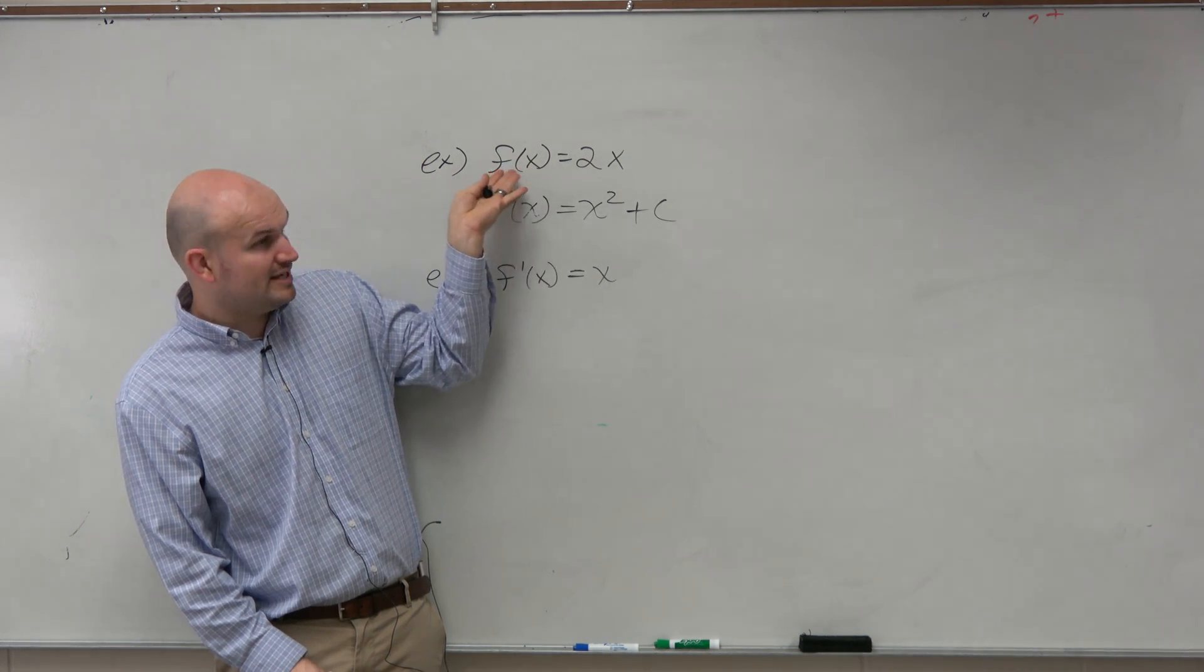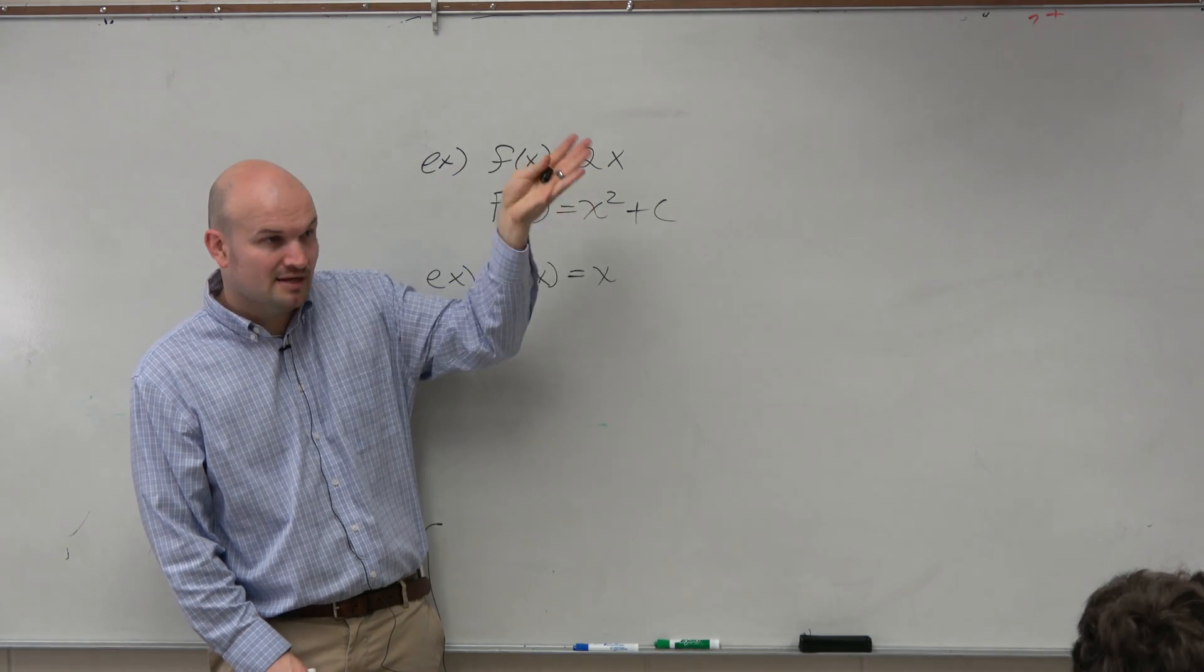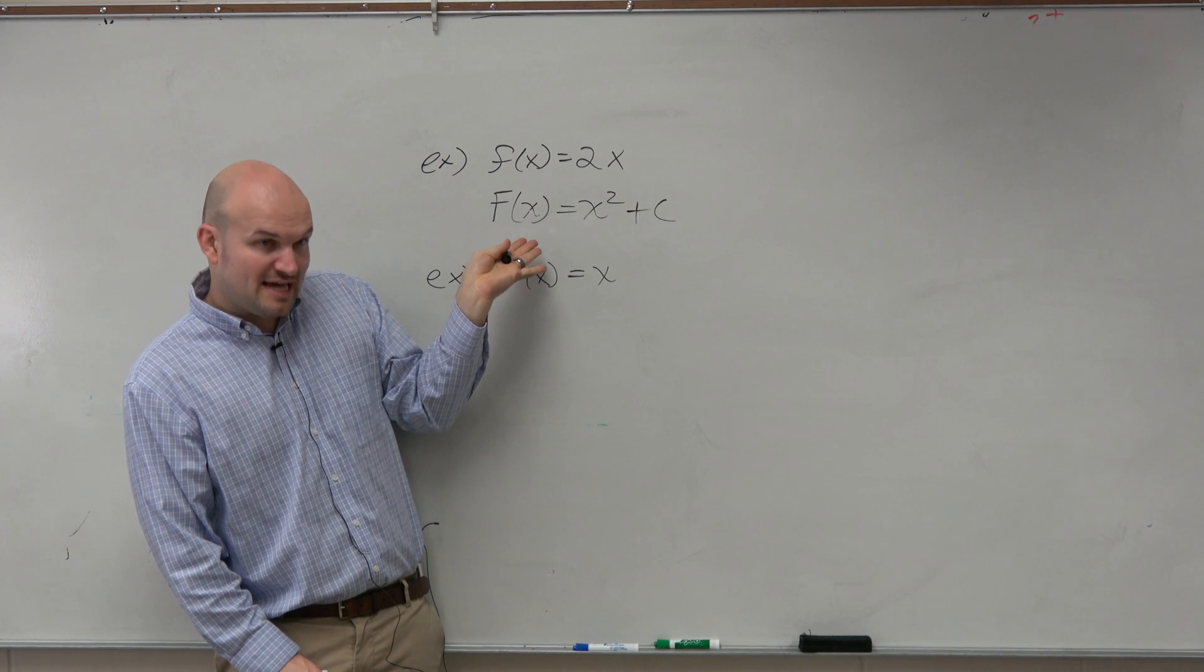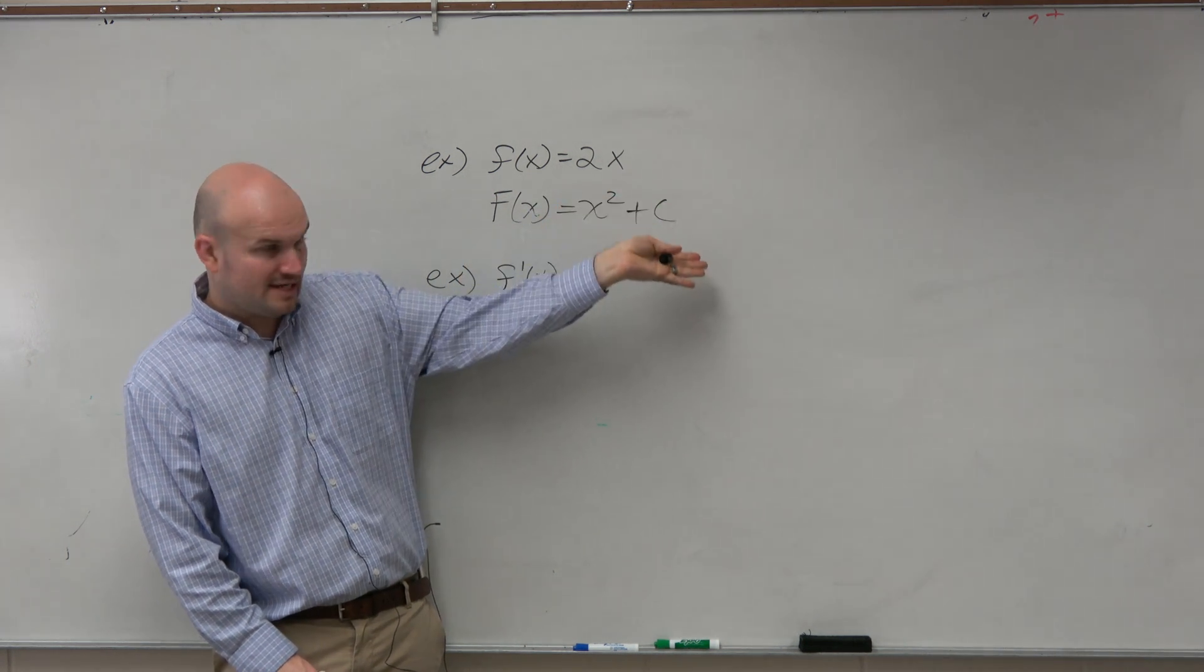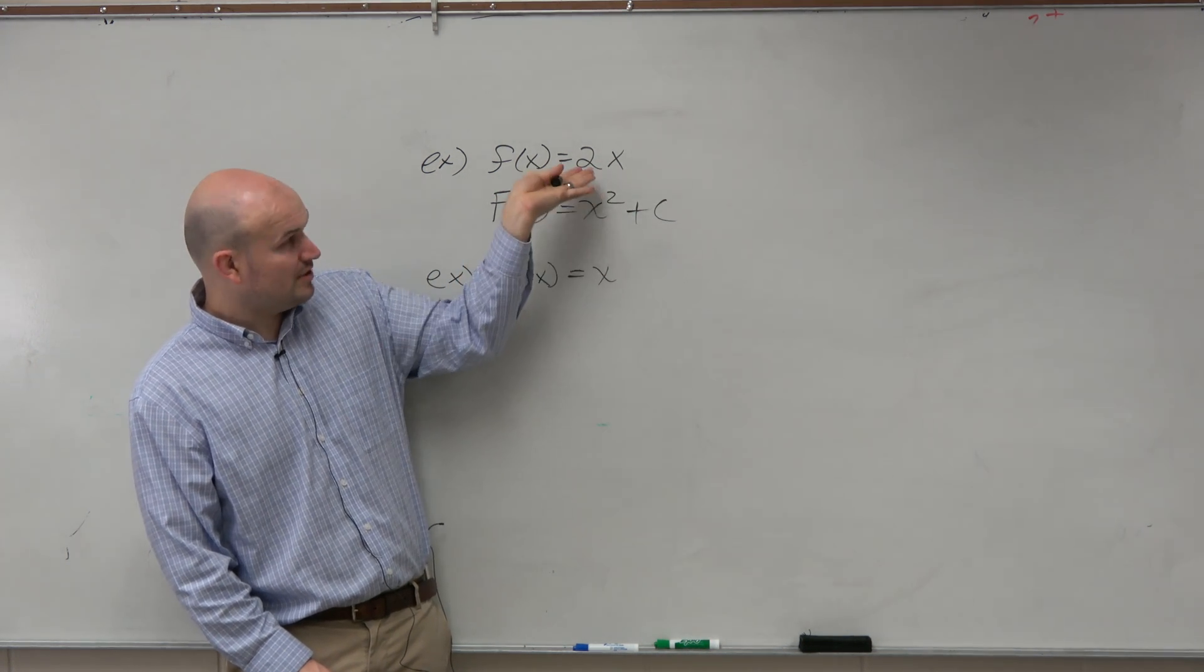So the antiderivative of f(x), we use capital F, equals x squared plus c, because we know the derivative of x squared gives us 2x.